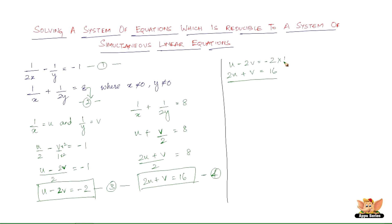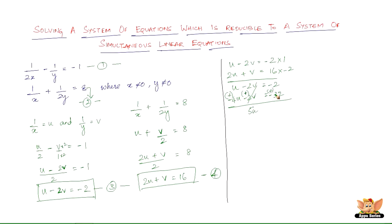The coefficient of v in equation 4 is 1, so we multiply equation 4 by 1. The coefficient of v in equation 3 is minus 2, so we multiply equation 4 by minus 2. This gives us minus 4u minus 2v equals minus 32. Subtracting and cancelling the v terms: 4u plus u gives 5u, and 32 minus 2 is 30. So 5u equals 30, therefore u equals 6.